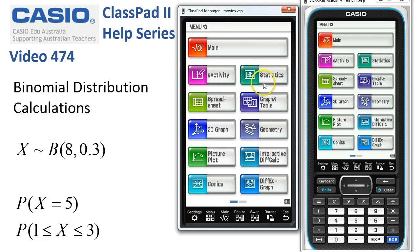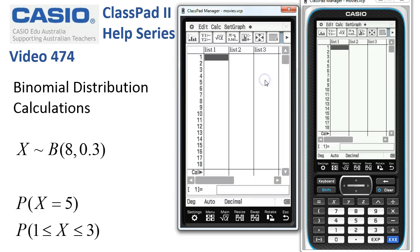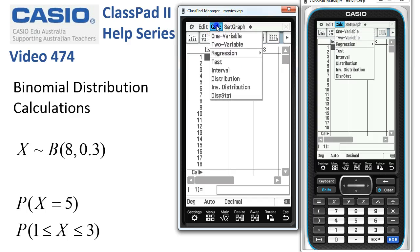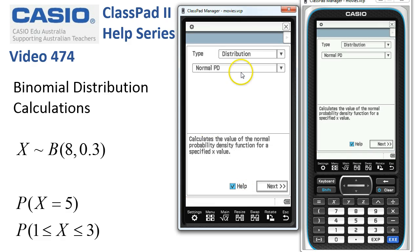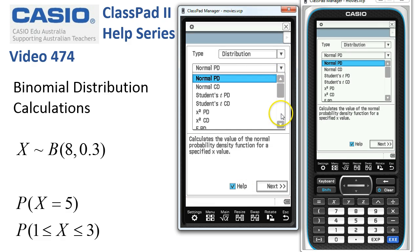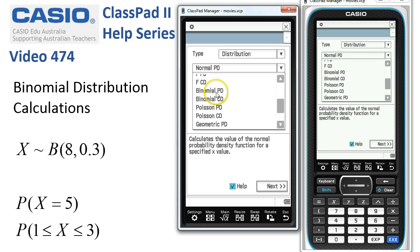Binomial distribution calculations in the statistics app. We'll start in here. The distributions are found under the calc menu, and here we are at distribution. If we tap help when we go looking for our distribution, it's a little bit easier to find.